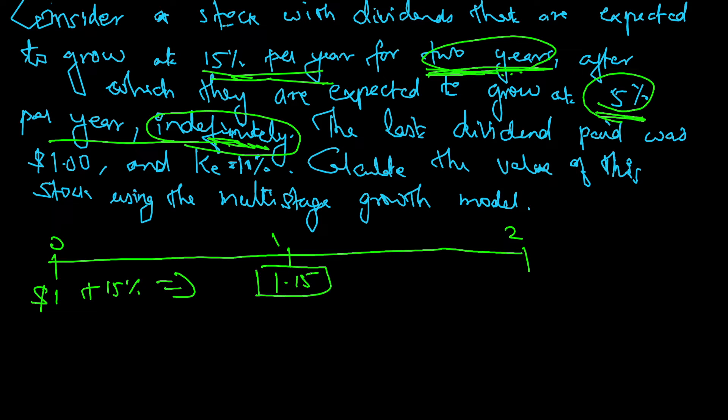And then further again it is growing at the rate of 15%, so 1.15 plus 15% comes to $1.3225. So this is the cash flow.